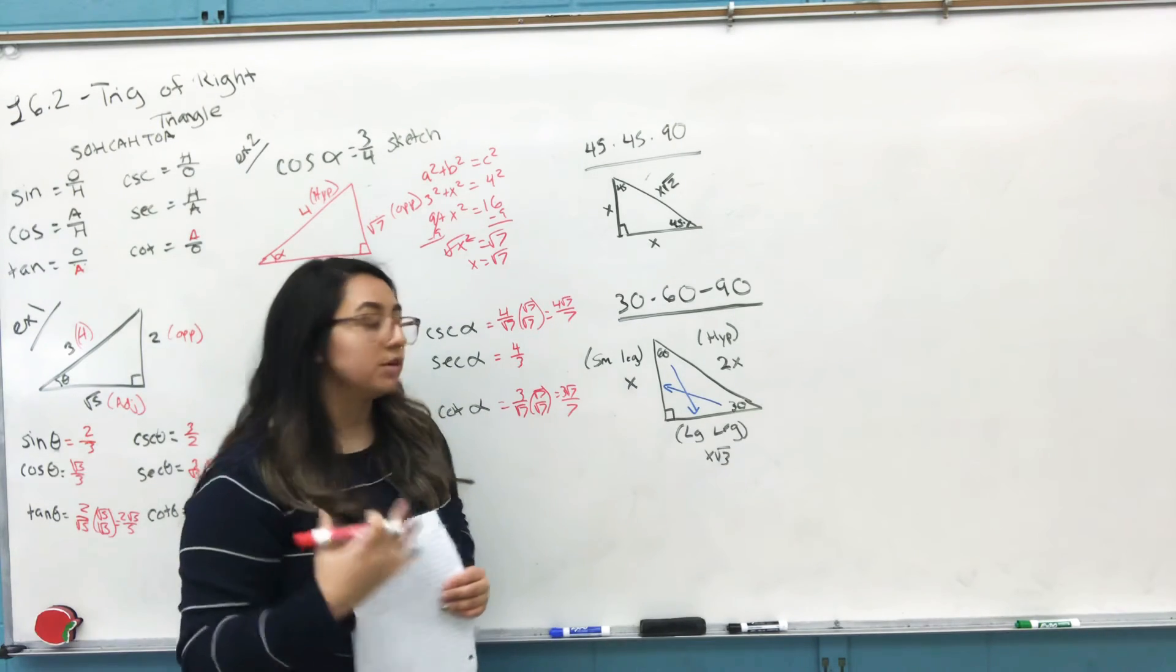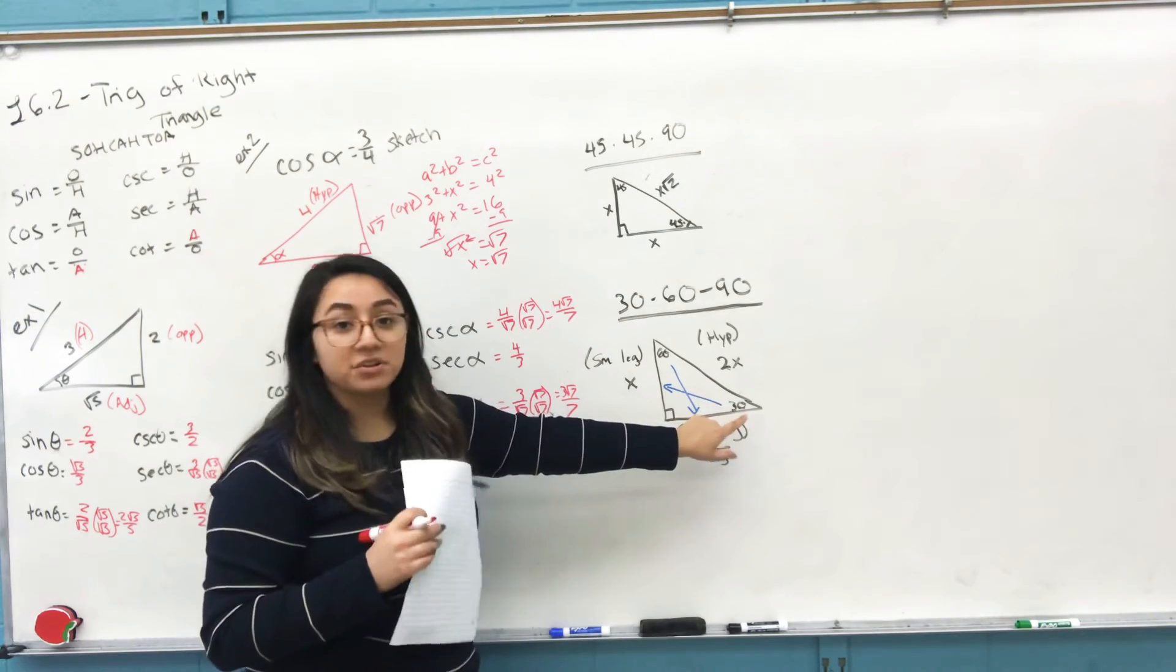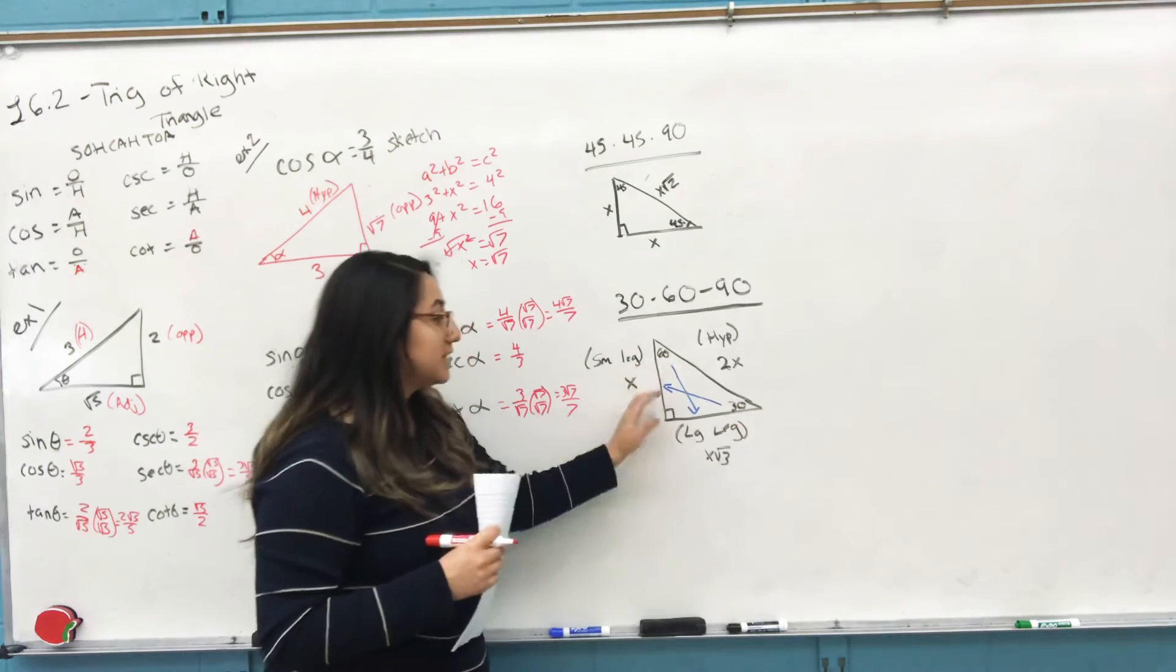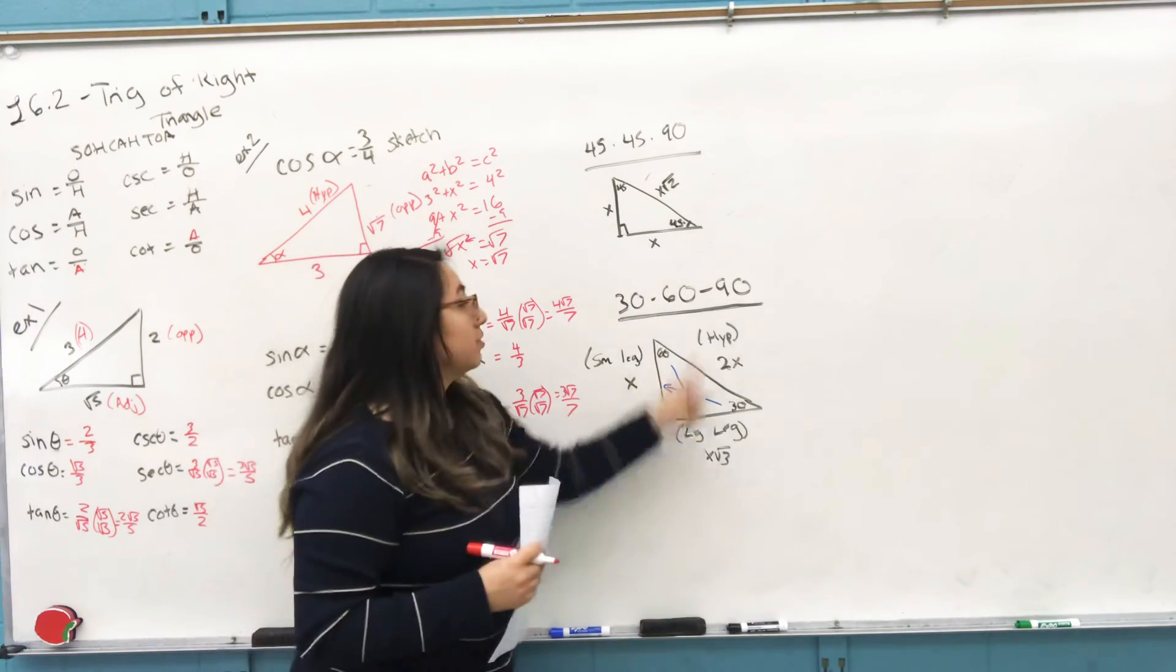Your small leg is the most important part of this lesson. Your small leg is always the opposite side of 30. So 30 is right here; if you draw an arrow to the opposite side, this is your small side, and that's what you should always look for for 30-60-90.